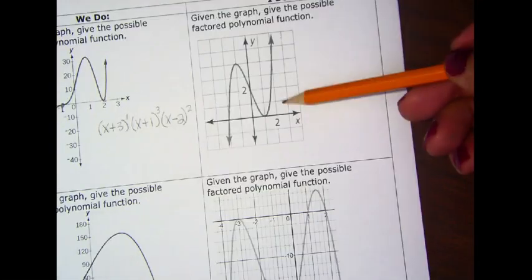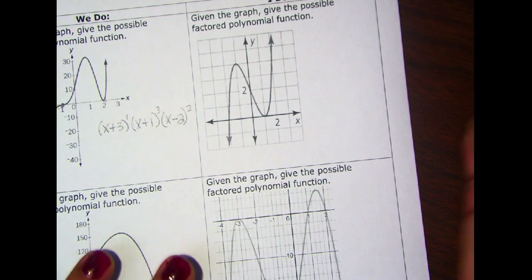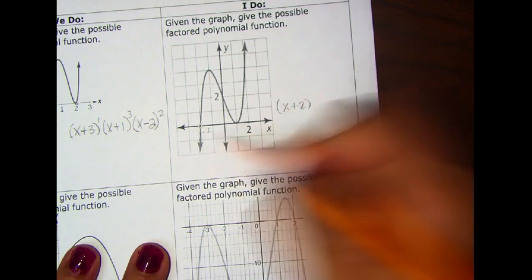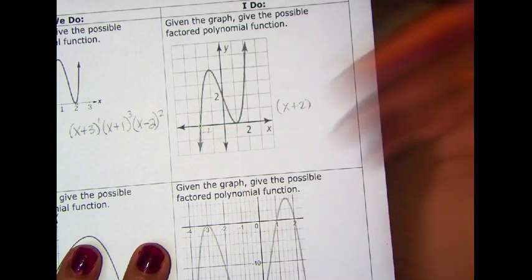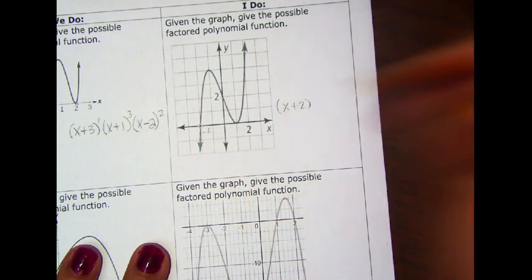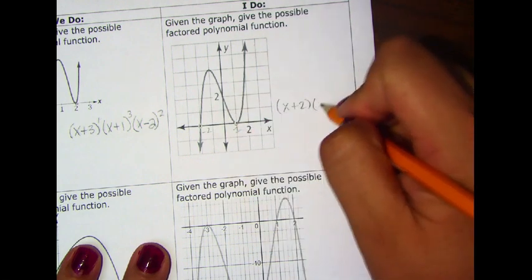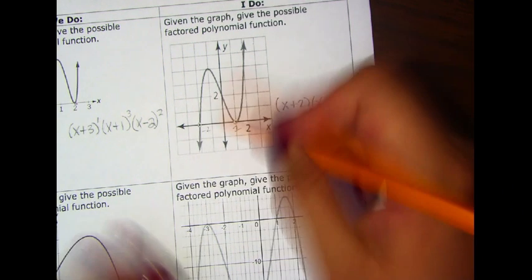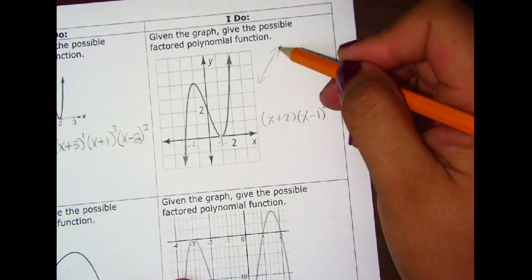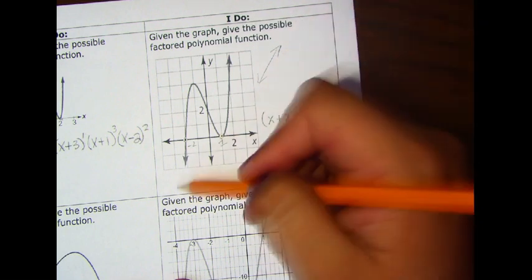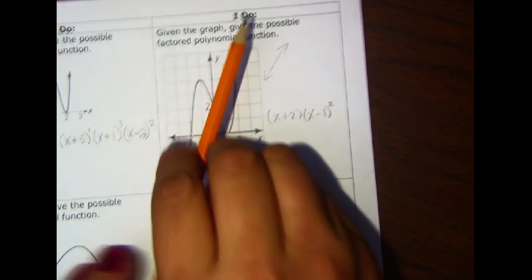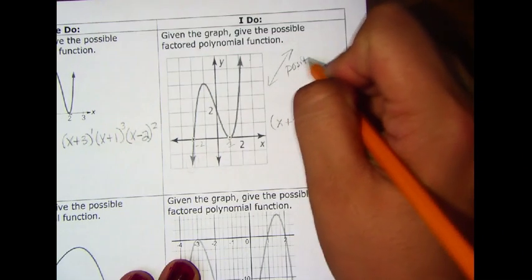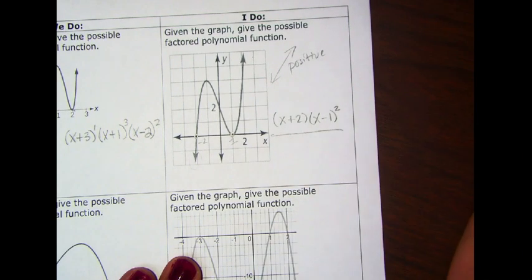Your job is to look at the graph and predict what the factors are for the polynomial. Here we can see it's touching at negative 2, so we write x plus 2 — because factors have the opposite sign of the zero. It goes through, so we leave an exponent of 1. Then it's touching at positive 1, so we write x minus 1, and because it's touching and turning, we put an exponent of 2. The end behavior goes up from left to right — the graph starts below and ends going up — which confirms a positive leading coefficient.